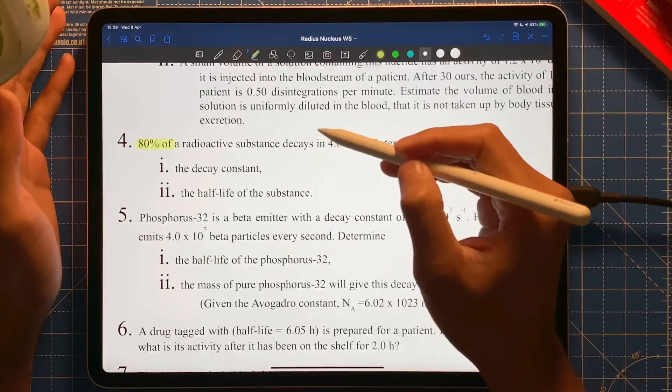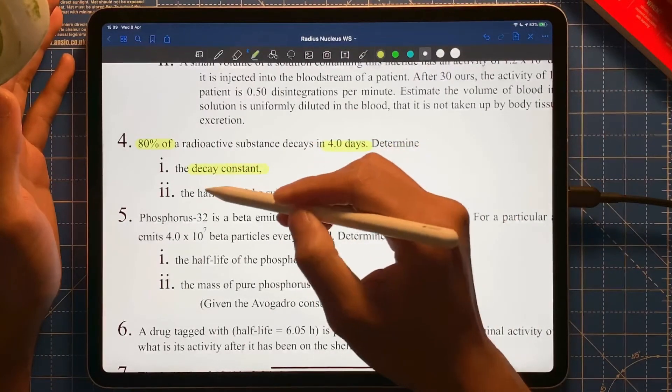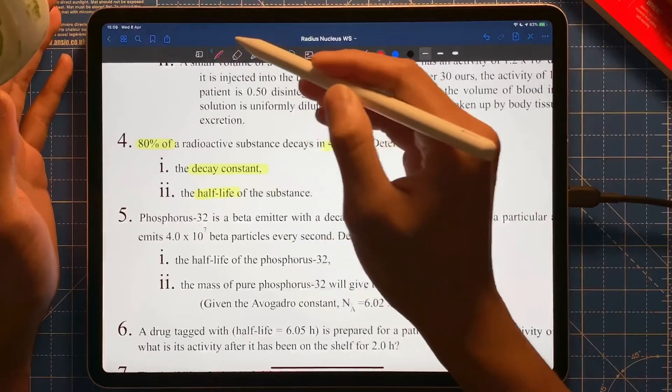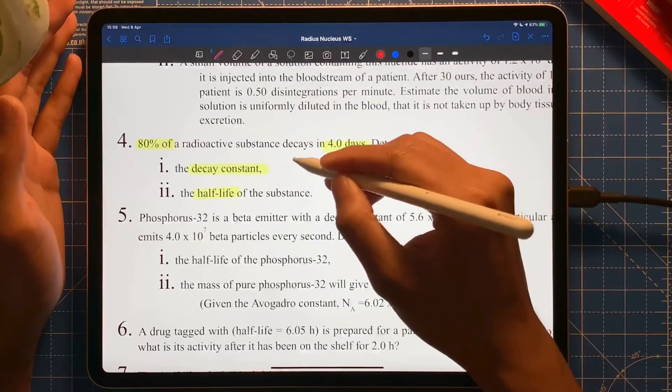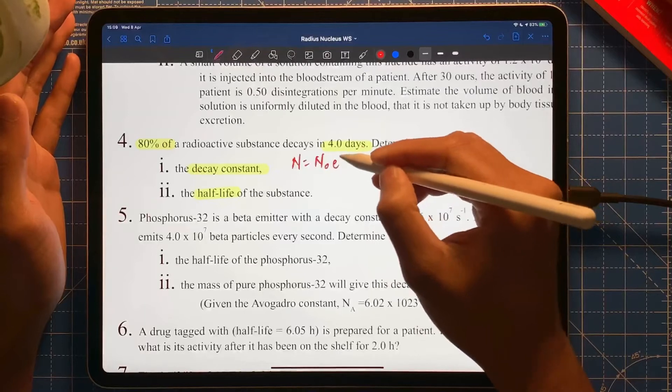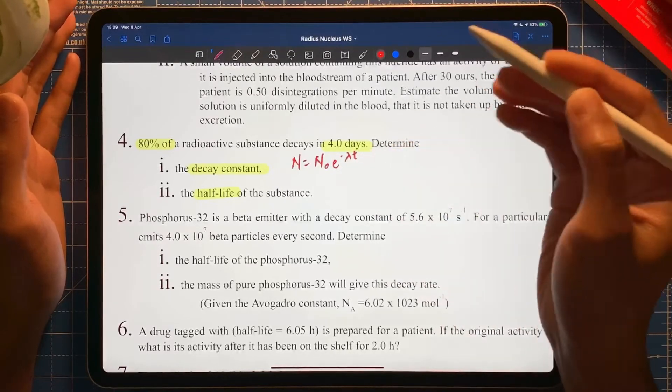Here's a worksheet. Let's say I have a question, that's question number four. Question number four: 80% of radioactive substance decays in four days. Find the decay constant and the second one is the half-life.